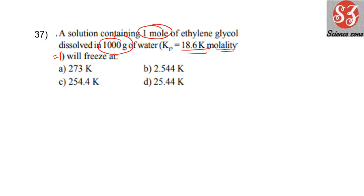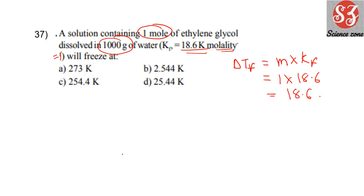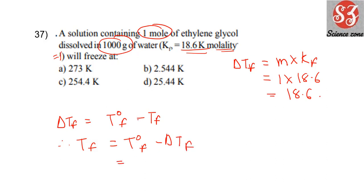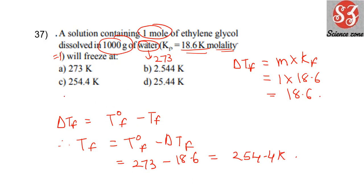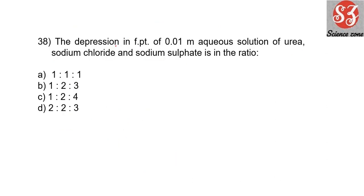Next question: find the temperature at which the solution freezes. First find delta Tf = molality × Kf. Molality = 1, Kf = 18.6, so delta Tf = 18.6. Freezing point of solution = T0F − delta Tf = 273 − 18.6 = 254.4 K. Answer is option C: 254.4 K.